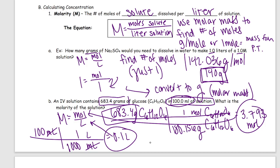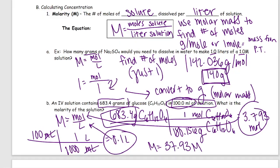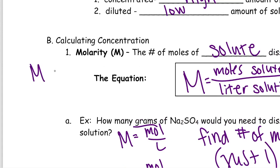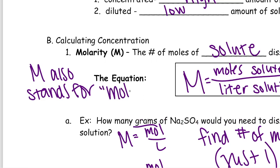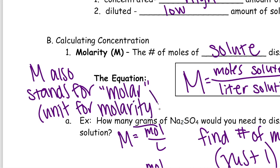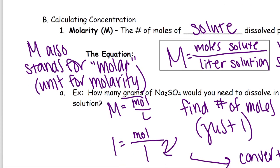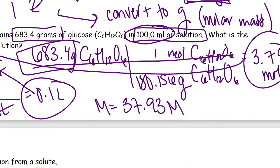So molarity equals 37.93, and our unit is also capital M, which stands for molar. The variable is capital M for molarity, and capital M also stands for molar as the unit. So the answer is 37.93 molar — that's a super strong solution.